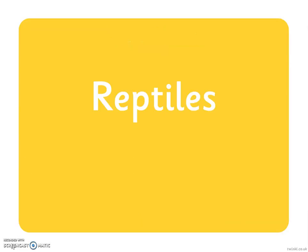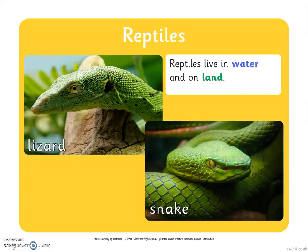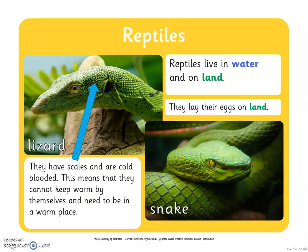The second group are reptiles. Here are some pictures of some reptiles. There is a lizard and a snake. Reptiles live in water and on land and they lay their eggs on land. They have scales and are cold-blooded. This means they cannot keep warm by themselves and need to be in a warm place. Therefore you will not find reptiles in cold environments.